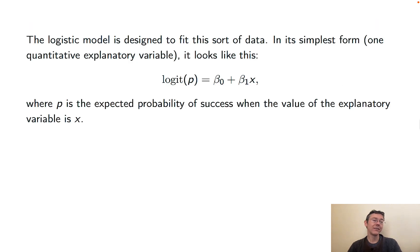The logistic model is designed to fit this sort of data. In its simplest form, like what we're considering here, where we have just one explanatory variable, it looks like this. The logit of p, the probability of success or being admitted in this case, then has a linear relationship, beta 0 plus beta 1 X.